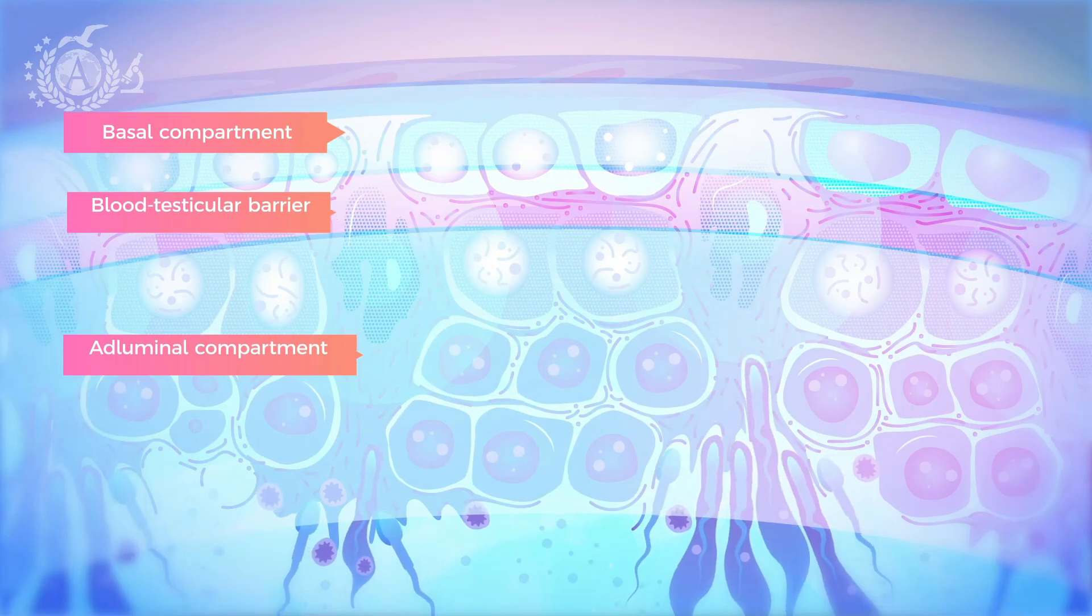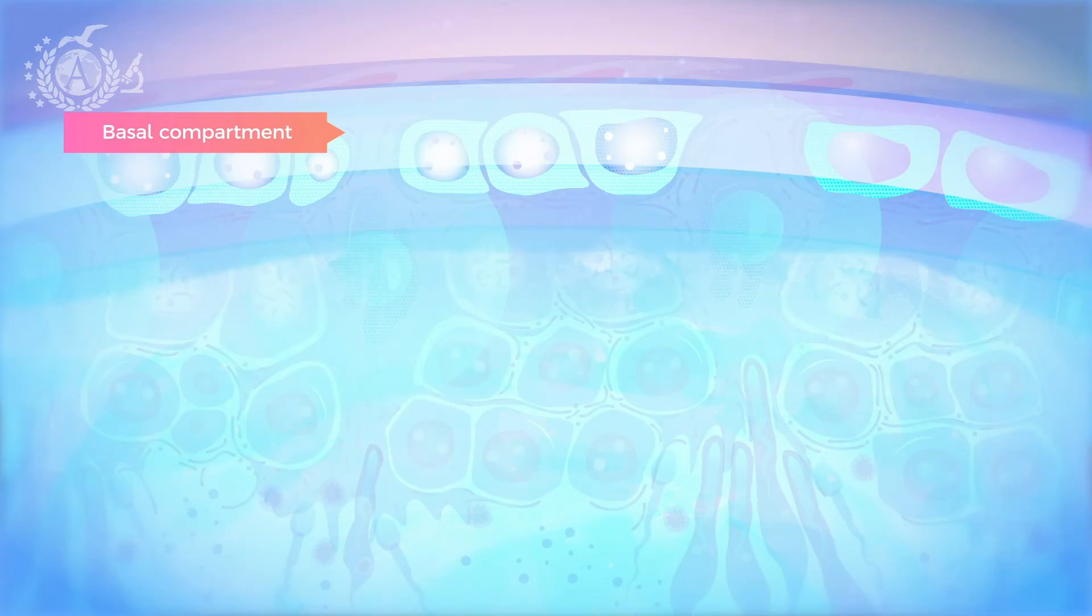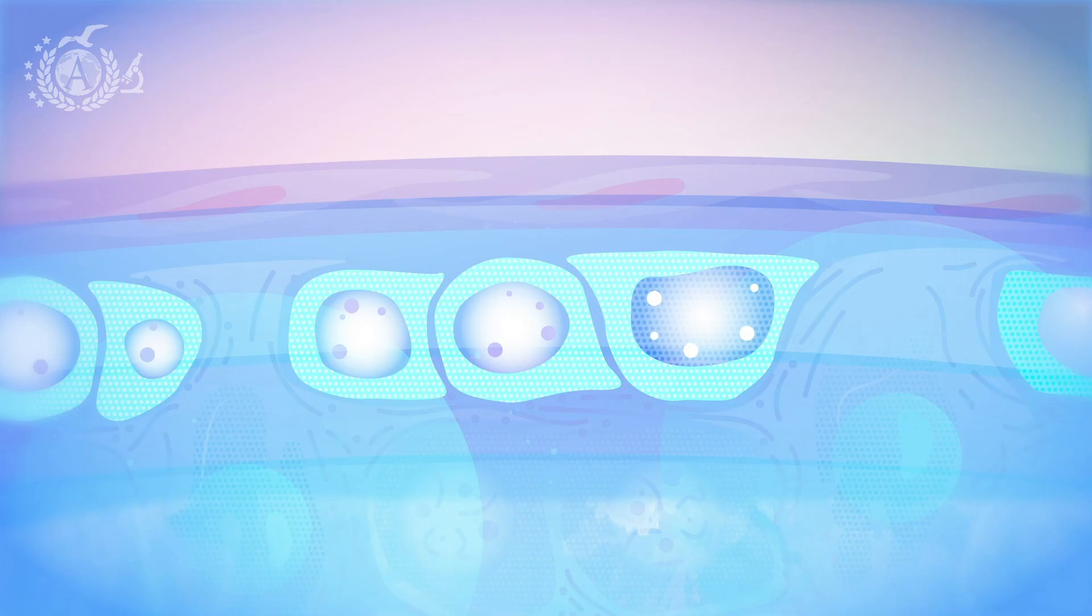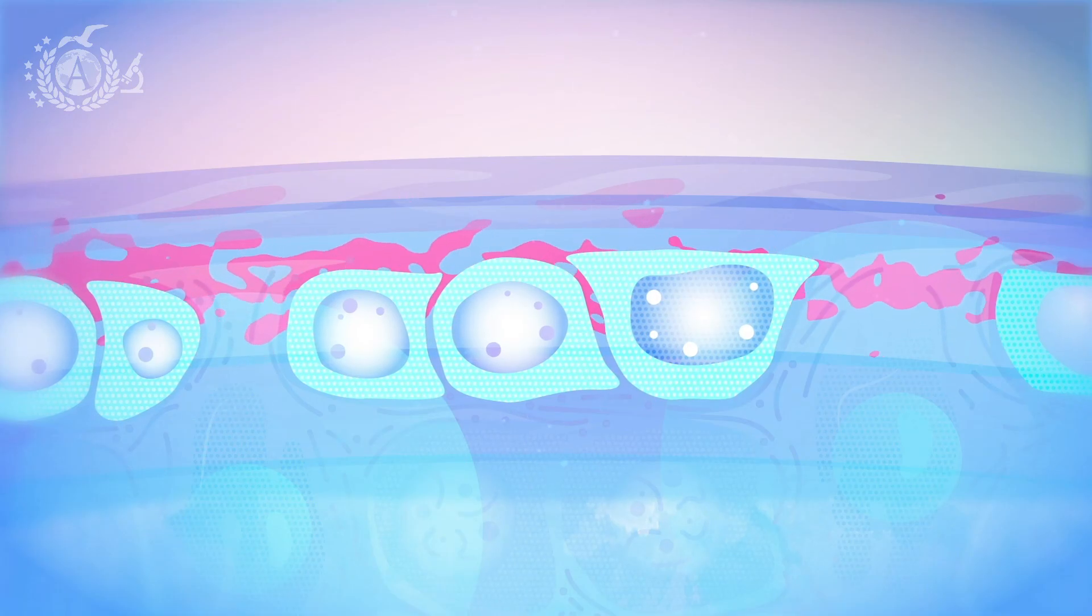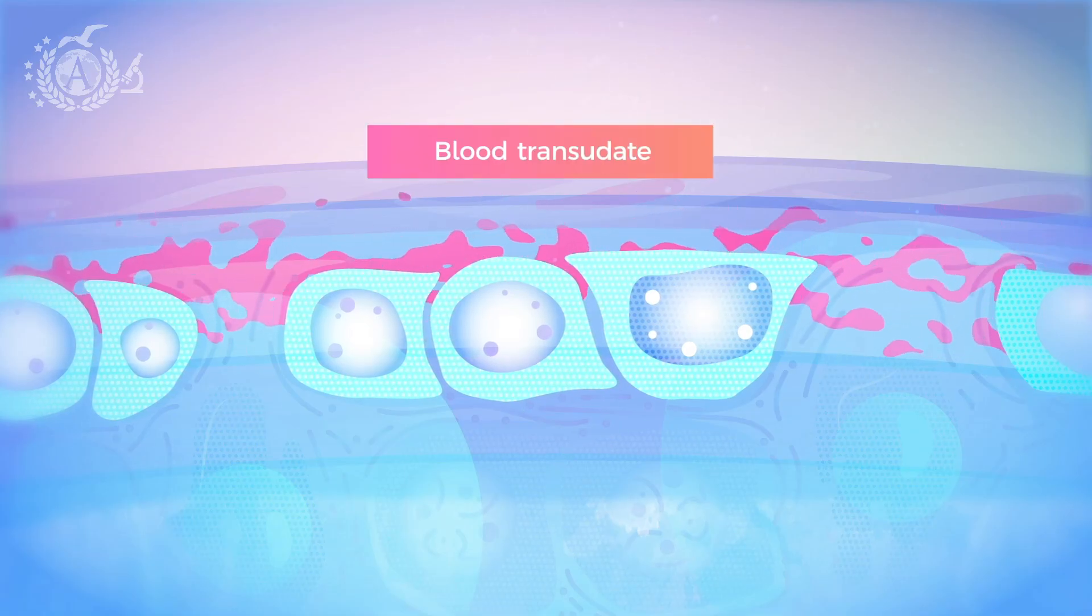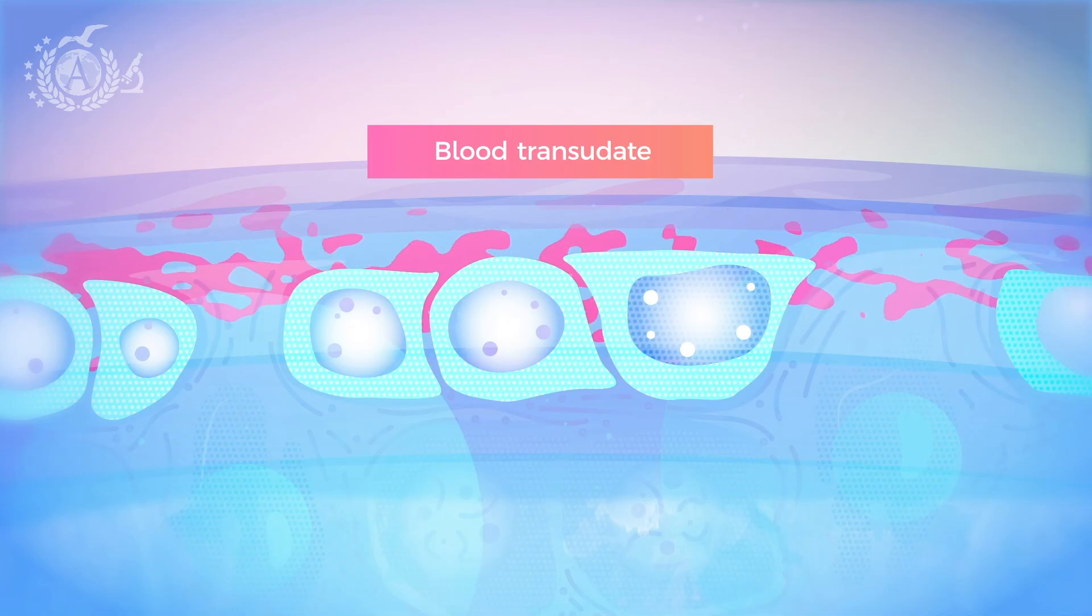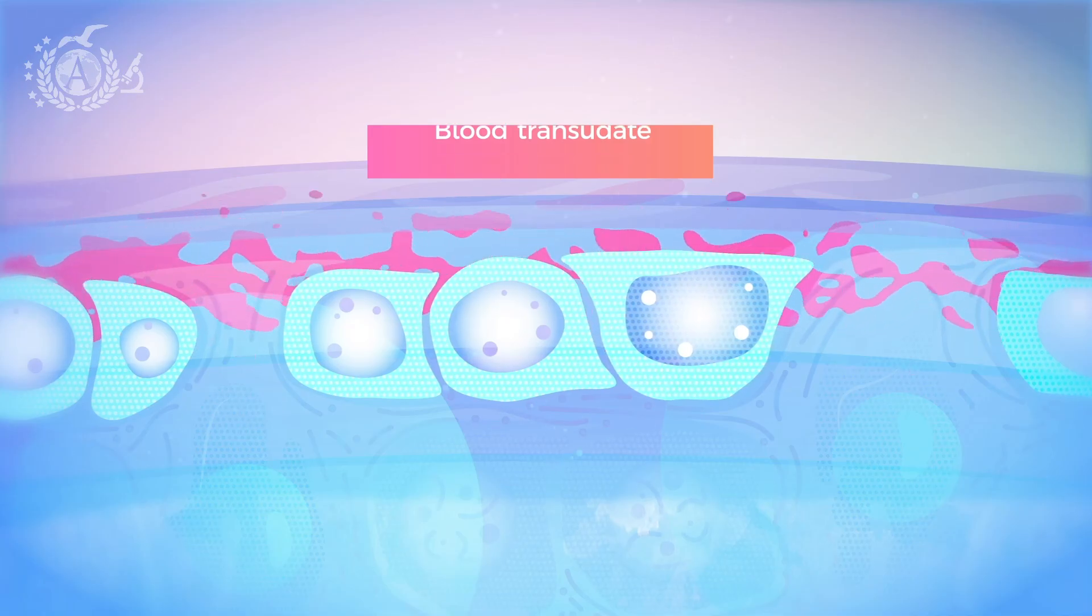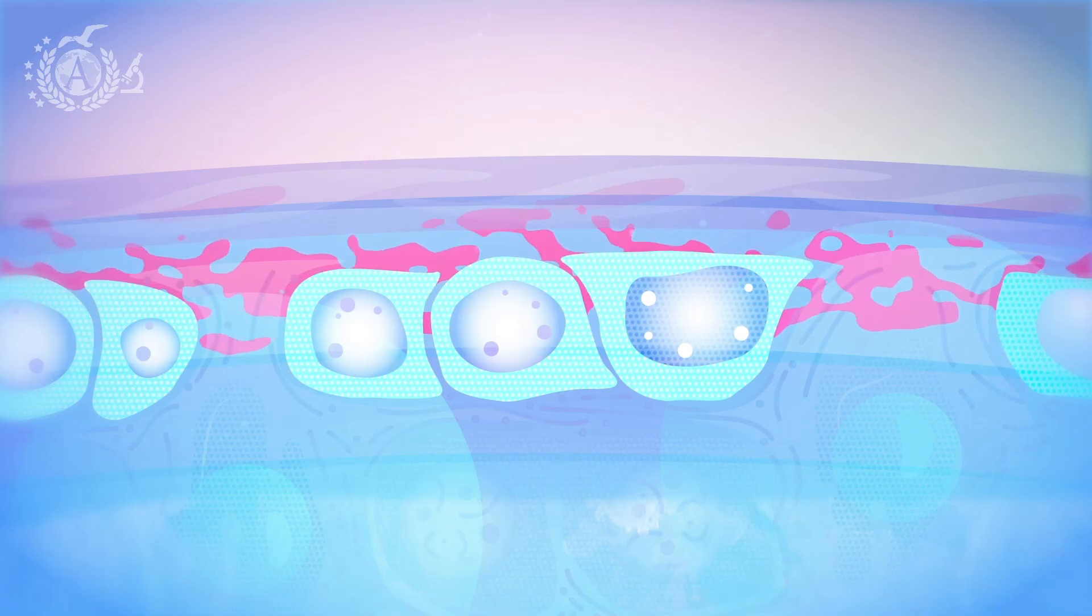The basal compartment is the portion between the occluding junctions and the basal lamina, so it is an outer-facing portion of the tubule this time. This compartment, like the previous one, is also filled with a particular liquid, which, however, is not produced by the surrounding Sertoli cells this time, but is a blood transudate from the vessels present in the basal lamina, hence the name hematotesticular. In these compartments,